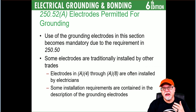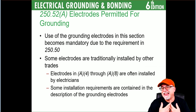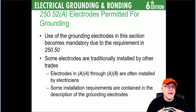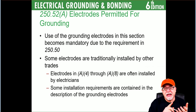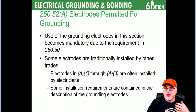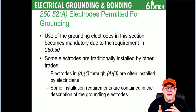Electrodes permitted for grounding: use of grounding electrodes in this section becomes mandatory due to requirements in 250.50. Some electrodes are traditionally installed by other trades — they're inherent to construction. Electrodes A4 through A9 are often installed by electricians, whereas A1, A2, and A3 — in-ground steel, concrete encased electrode, or water pipe — are generally installed by somebody else. If it's a water pipe ground, you've got to supplement it obviously.